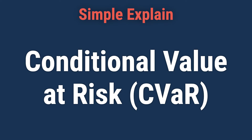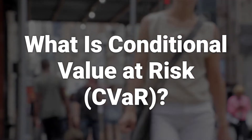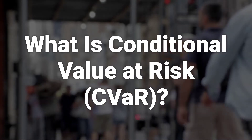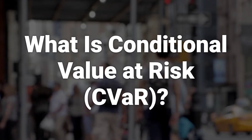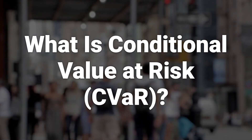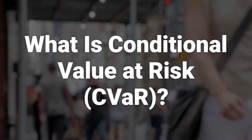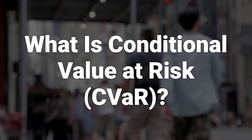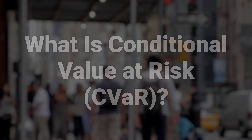Today, we will talk about Conditional Value at Risk, also known as the expected shortfall. It is a risk assessment measure that quantifies the amount of tail risk an investment portfolio has. CVaR is derived by taking a weighted average of the extreme losses in the tail of the distribution of possible returns beyond the Value at Risk (VAR) cutoff point. Conditional Value at Risk is used in portfolio optimization for effective risk management.